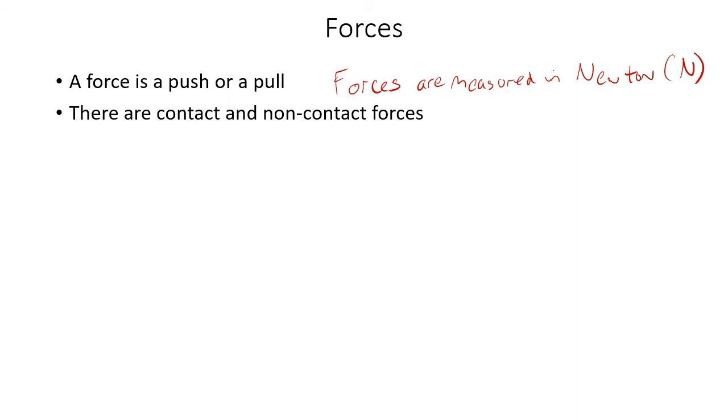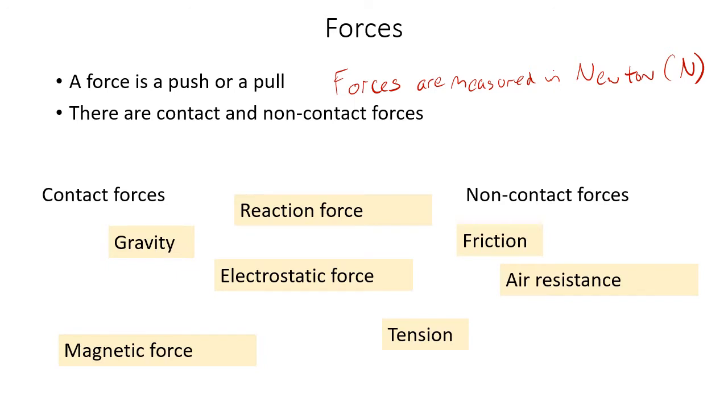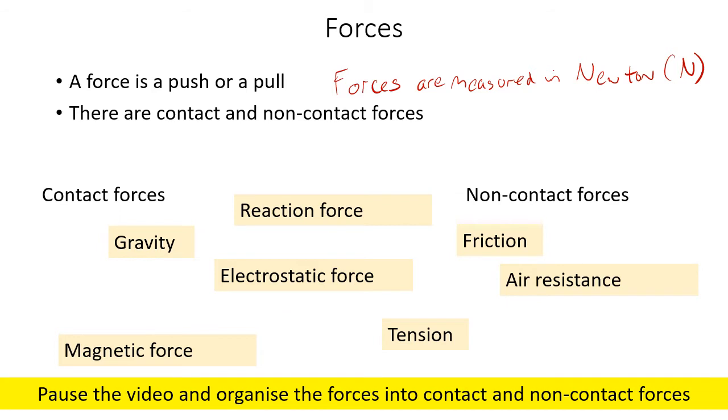So we're going to have a look first at what are forces. Now, force can be a push or a pull. Forces, as we know, are measured in newtons. Named after Isaac Newton, great scientist. We use the symbol N for Newtons, a capital N. And there are contact and non-contact forces. A contact force is something where the two objects have to touch each other to exert a force. And there are non-contact forces where the two objects do not touch each other. I have a list of contact and non-contact forces. I would like you to pause the video and organize the forces into contact and non-contact forces.